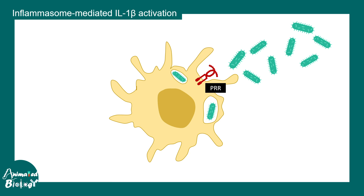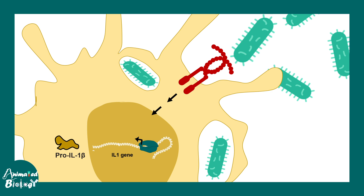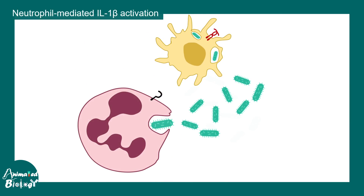Now let's understand the production of interleukin 1 in more detail. Bacteria are recognized and engulfed by macrophages. The toll-like receptor triggers signaling cascades which ultimately lead to transcription of the interleukin 1 gene. The interleukin 1 gene produces pro-interleukin 1 beta — a pro-form of that protein which is not yet active. Inflammasome complexes then cleave the pro-interleukin 1 beta into the mature interleukin 1 beta, which is then secreted outside.